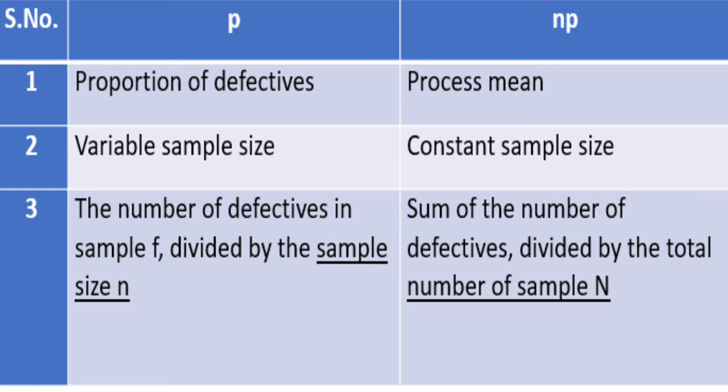If we talk about a bit of definition, then in P chart, it is the number of defectives in samples divided by the sample size. But when we talk about NP chart, we are talking about the sum of number of defectives divided by total number of samples.